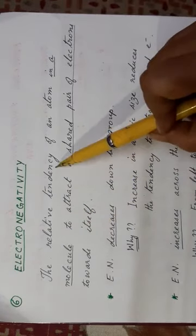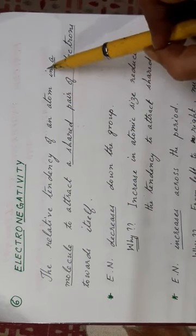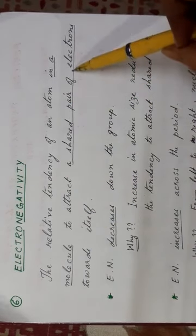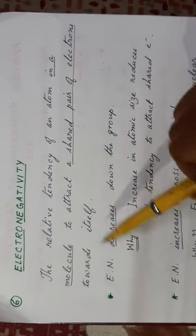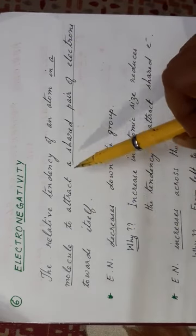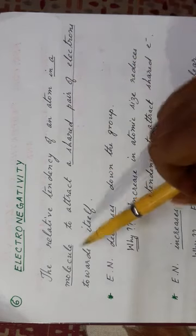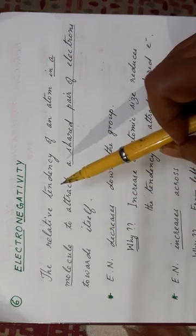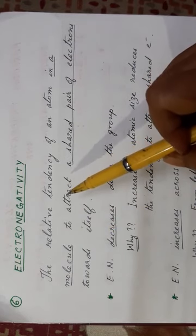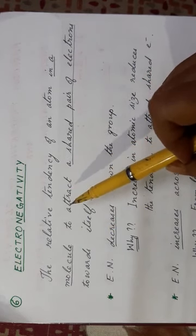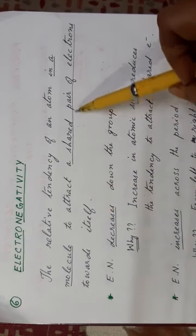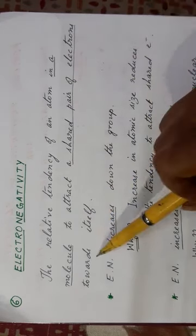The relative tendency of an atom in a molecule to attract a shared pair of electrons towards itself. Now what is important here is that it is an atom in a molecule. Electron affinity was about an isolated atom, whereas electronegativity is about an atom in a molecule and it attracts the shared pair of electrons towards itself.